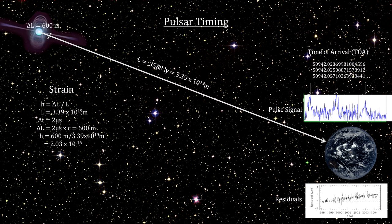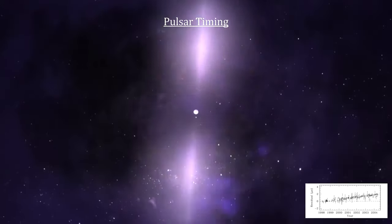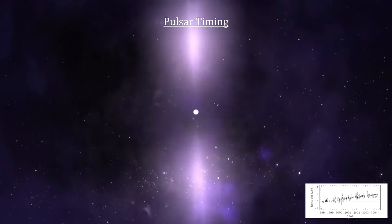That's the 600 meters in this example. Of course, thorough analysis is needed to rule out other causes for a graph like this. For example, we would see this residuals pattern if instead of a gravitational wave, the pulsar's rotation rate was actually slowing down.